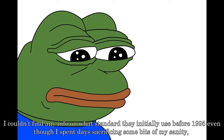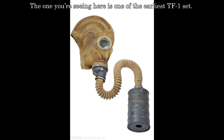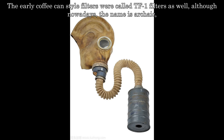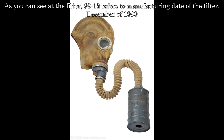Probably because of some restrictions. As mentioned, the TF1 and the coffee-can style filter have a quite common history. The one you're seeing here is one of the earliest TF1 sets. The early coffee-can style filters were called TF1 filters as well, although nowadays the name is archived — no longer in formal use — though it has been used informally to describe newer filters. As you can see, the label '99-12' refers to the manufacturing date of December 1999.